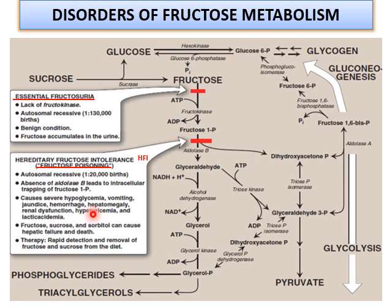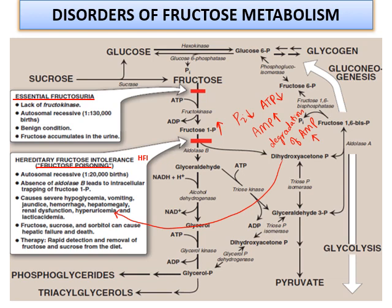Hyperuricemia is associated with aldolase B deficiency and fructose poisoning. When fructose 1-phosphate is high, inorganic phosphate is low and ATP is also low, causing AMP to rise. When AMP rises, its degradation also enhances, and the degradation product of AMP is uric acid, resulting in hyperuricemia. Uric acid levels and lactic acid levels compete with each other for the same kidney transporter, so hyperuricemia may also result in lactic acidemia.